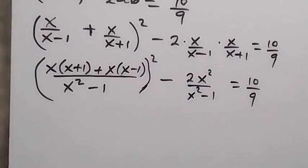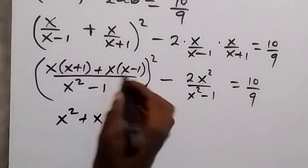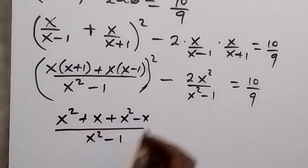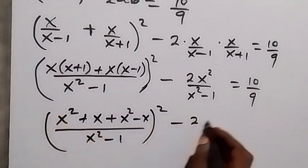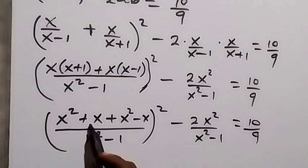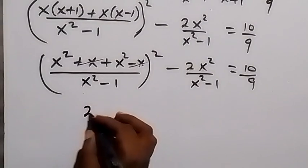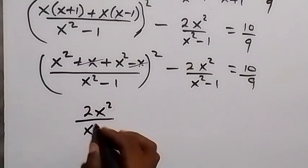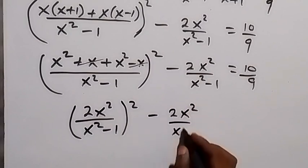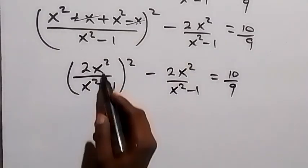Equals 10/9. Expanding the brackets: x(x+1) = x²+x and x(x-1) = x²-x. The x and -x cancel out, and x²+x² gives 2x². So we have (2x²/(x²-1))² - 2x²/(x²-1) = 10/9.